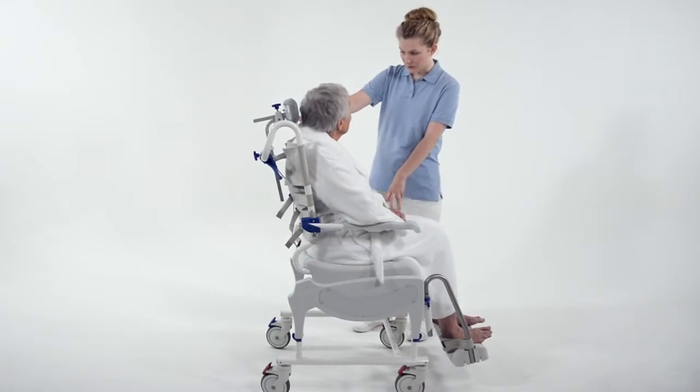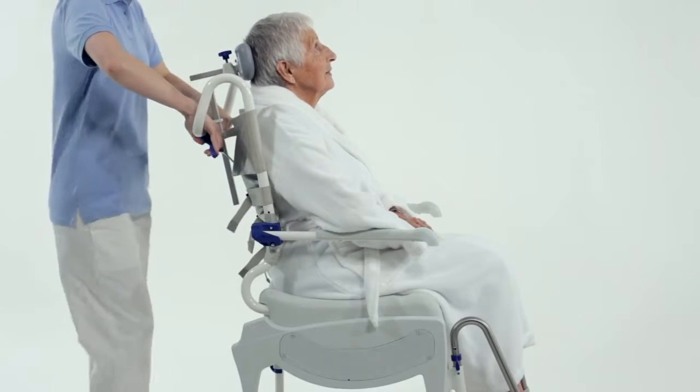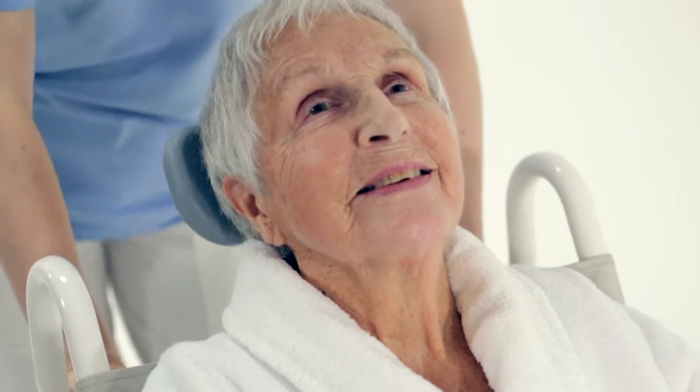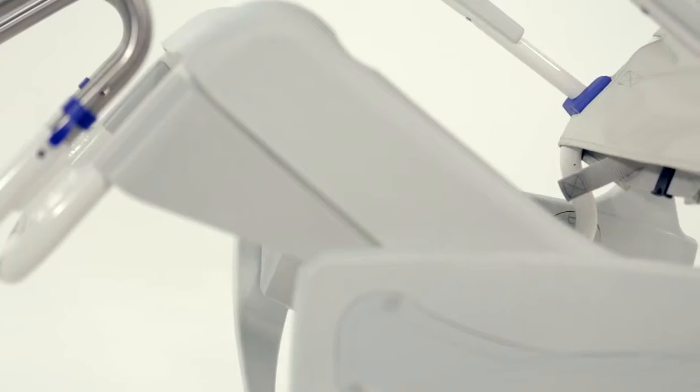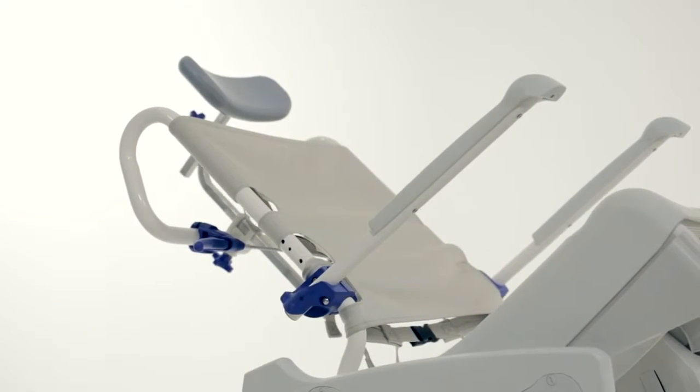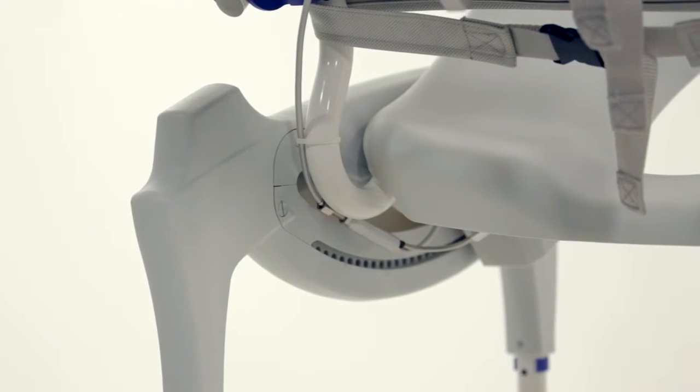For some, using a tilt-in-space shower chair commode can be a daunting experience, as users can often feel anxious and unsafe. With this in mind, we have made two key design changes to the tilt on the Ocean VIP Ergo and Ocean Dual VIP Ergo.